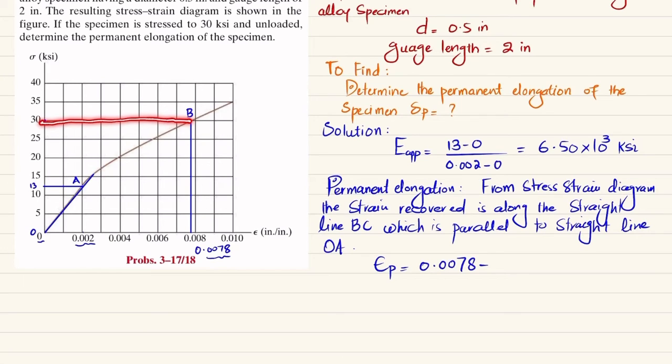When you release this load of 30 ksi, it will not come back to the original position but will have a certain strain. That strain can be obtained using the load 30 ksi, so 30 times 10³ divided by the modulus of elasticity, which is 6.50 times 10³.